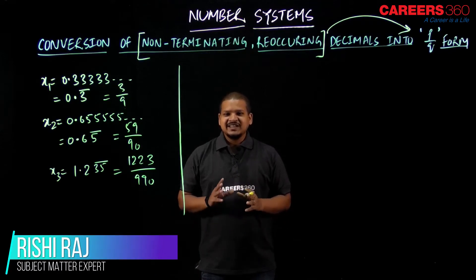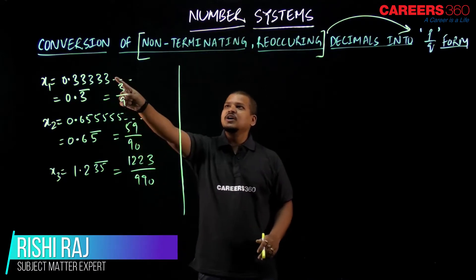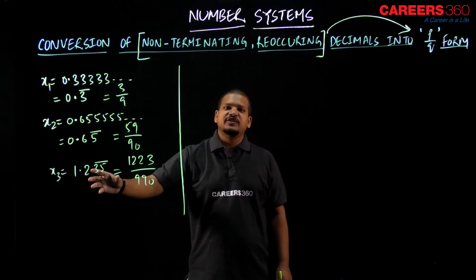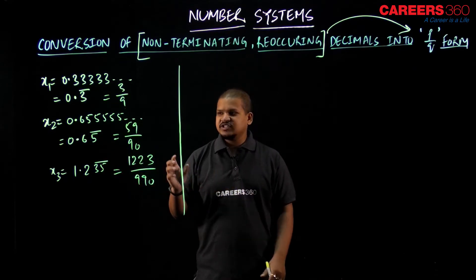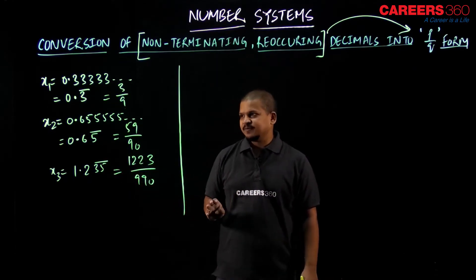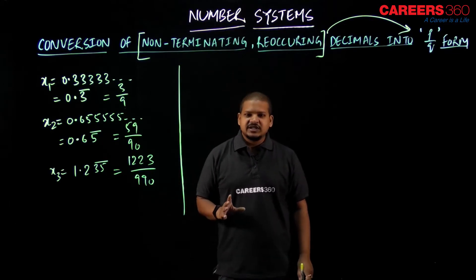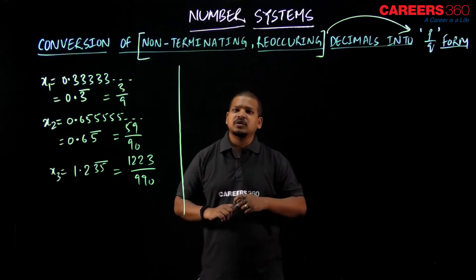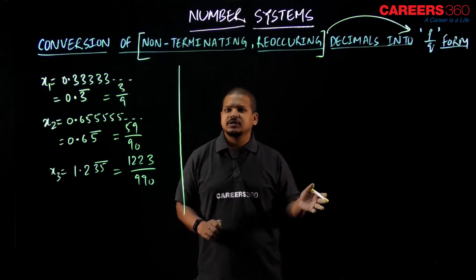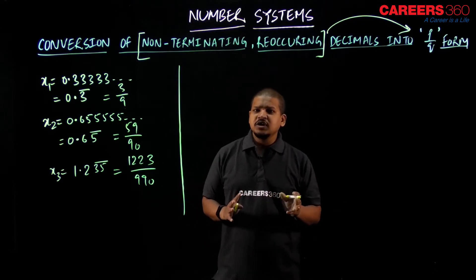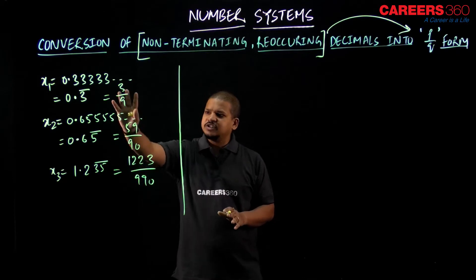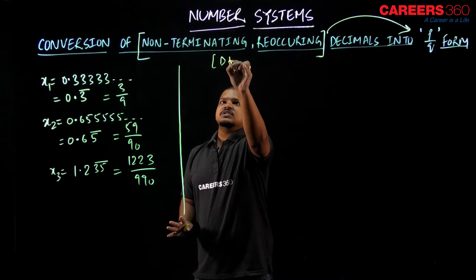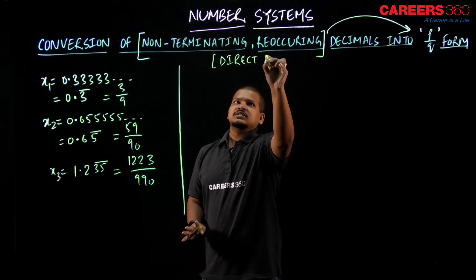Welcome back everyone. In the last session we saw how to convert a non-terminating recurring decimal into p/q form and discussed various types of decimals which can be converted into p/q form. Now there is a direct method which lets us ignore the lengthy calculations — but it is more of an observation. So let's observe these p/q fractions first. I'm going to discuss this direct method — it's a short trick.